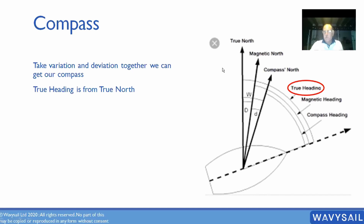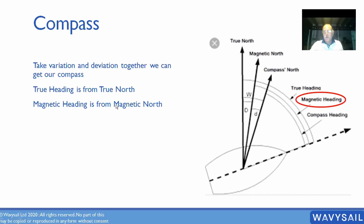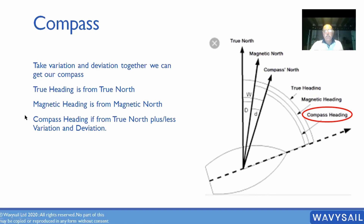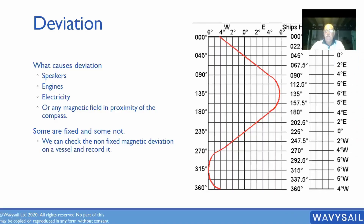We've got three different headings: compass, magnetic, and true. True is the one on the chart. Magnetic north doesn't take into account any deviation. The compass heading is deviation plus variation — the two together. The reason we combine them when we call it compass heading on a boat is because it's a fixed unit — you can swing it and make a deviation card for it. It's fixed. The engine's fixed. The electrics and everything else on board is fixed.